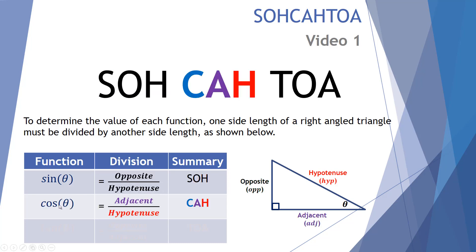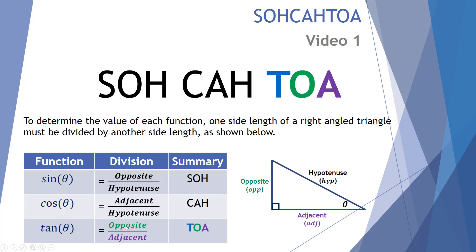The next function is cos. Cos is equal to adjacent over hypotenuse. This is remembered as CAH. Finally, tan. Tan is equal to opposite over adjacent, hence the TOA. Tan is opposite over adjacent. Here's our summary of the SOHCAHTOA, color-coded for you.